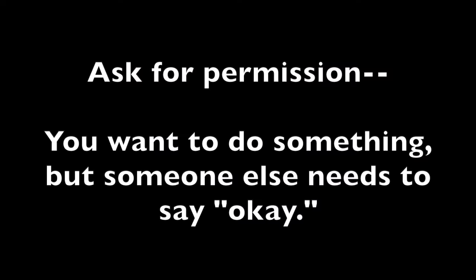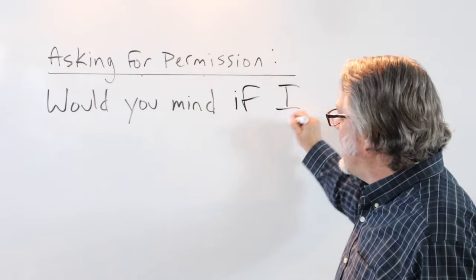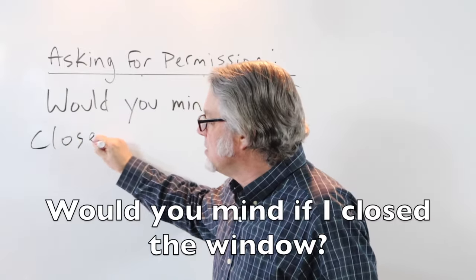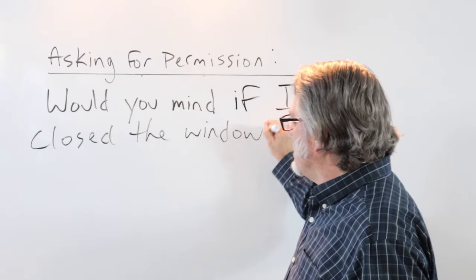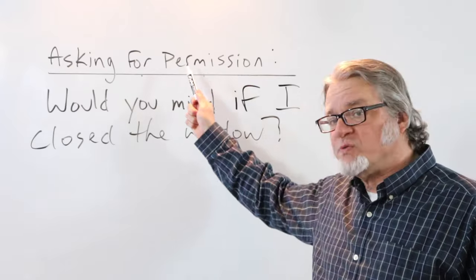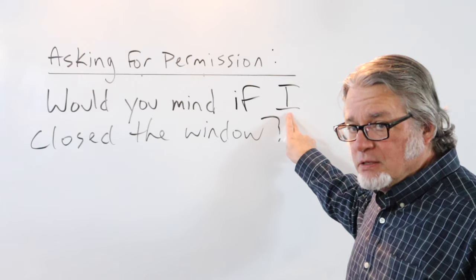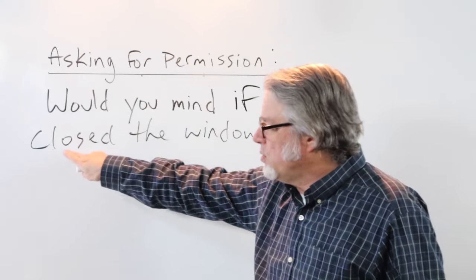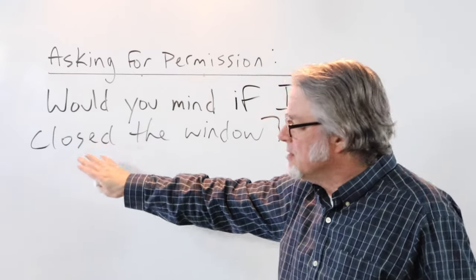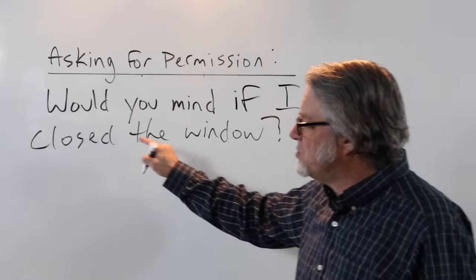When asking for permission, use 'would you mind if' and then add a subject. For example: 'would you mind if I closed the window?' You're asking someone else for permission to do something. After 'if' you need a subject — it's usually going to be 'I' — and notice that the verb is in the past tense even though the situation is now.